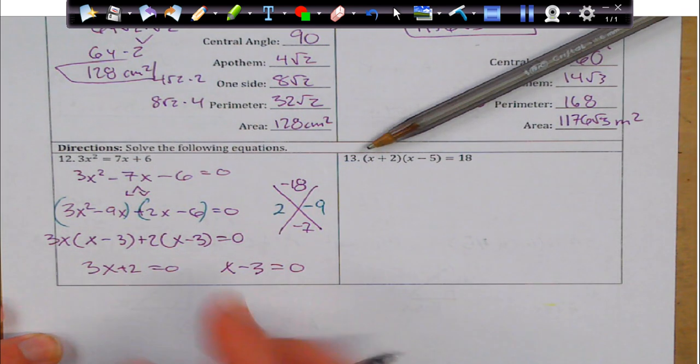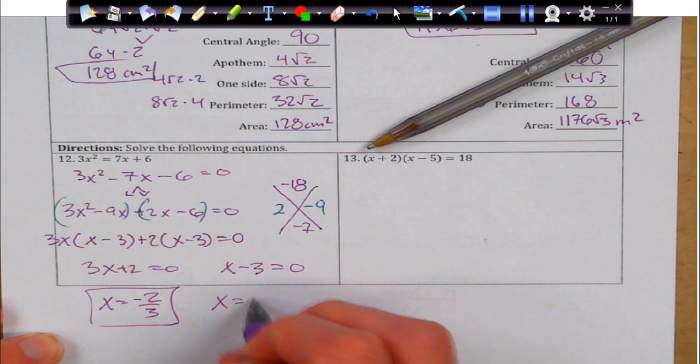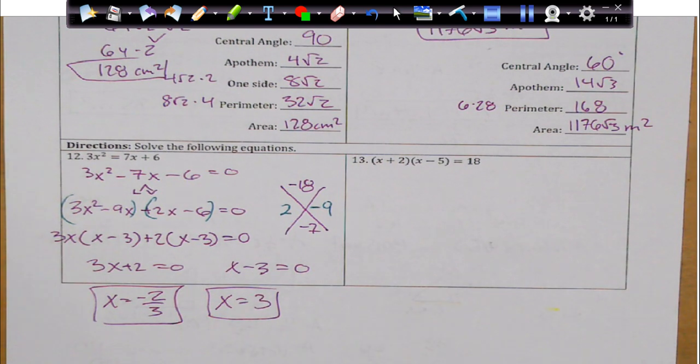And x minus 3 equals 0. This one, we're going to subtract 2, divide by 3. So, that's going to give me negative 2 thirds. And this one, I'm just going to add 3. And that will just give me x equals 3.